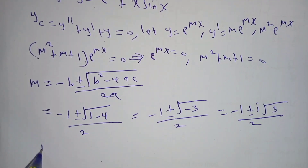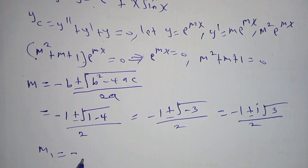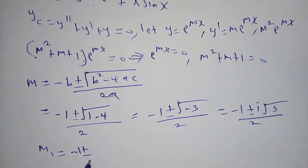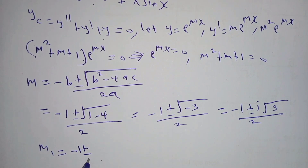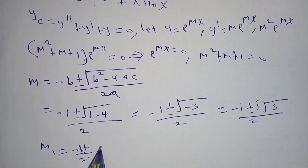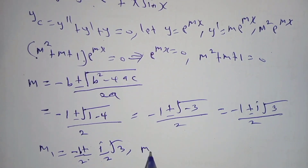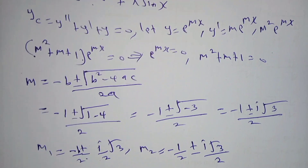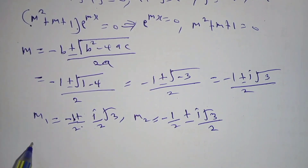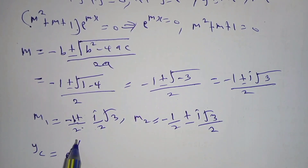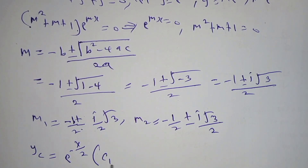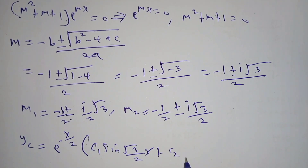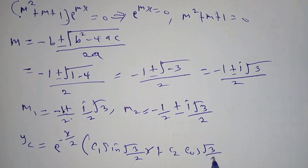So our roots are M = −1/2 ± i(√3/2). This means the complementary solution Y_c is given by e^(−x/2) · [C₁ sin(√3/2 · x) + C₂ cos(√3/2 · x)].